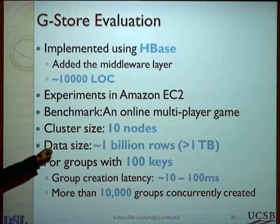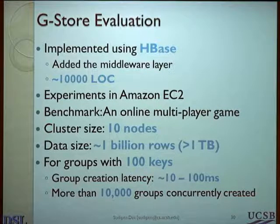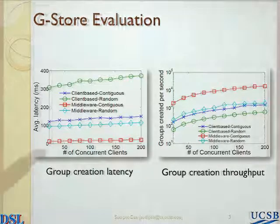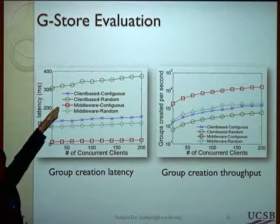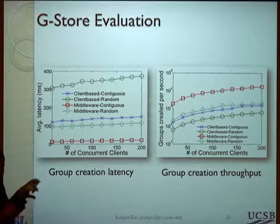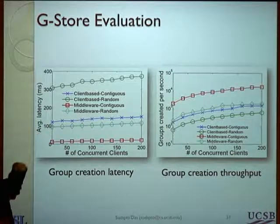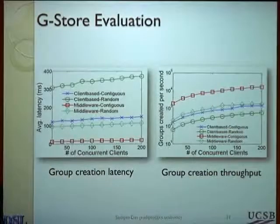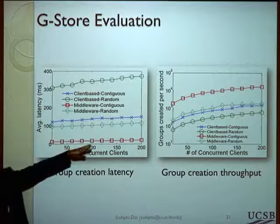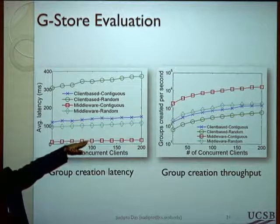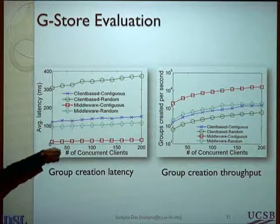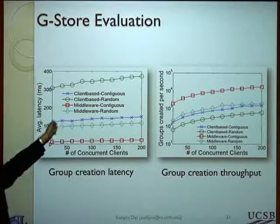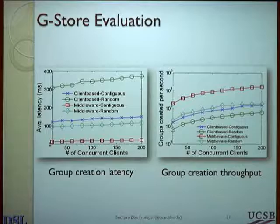This is just a snapshot of the experiment — the paper gets into details of how the numbers vary on different parameters. This view shows that depending on how you implement the middleware layer — within the key-value store or sitting outside — and depending on two different distributions of key selection, how does the group creation latency and throughput vary? For a distribution where keys are contiguous, the implementation can efficiently batch the group formation to give very low cost group formation, while an adversarial distribution can obviously be worse.